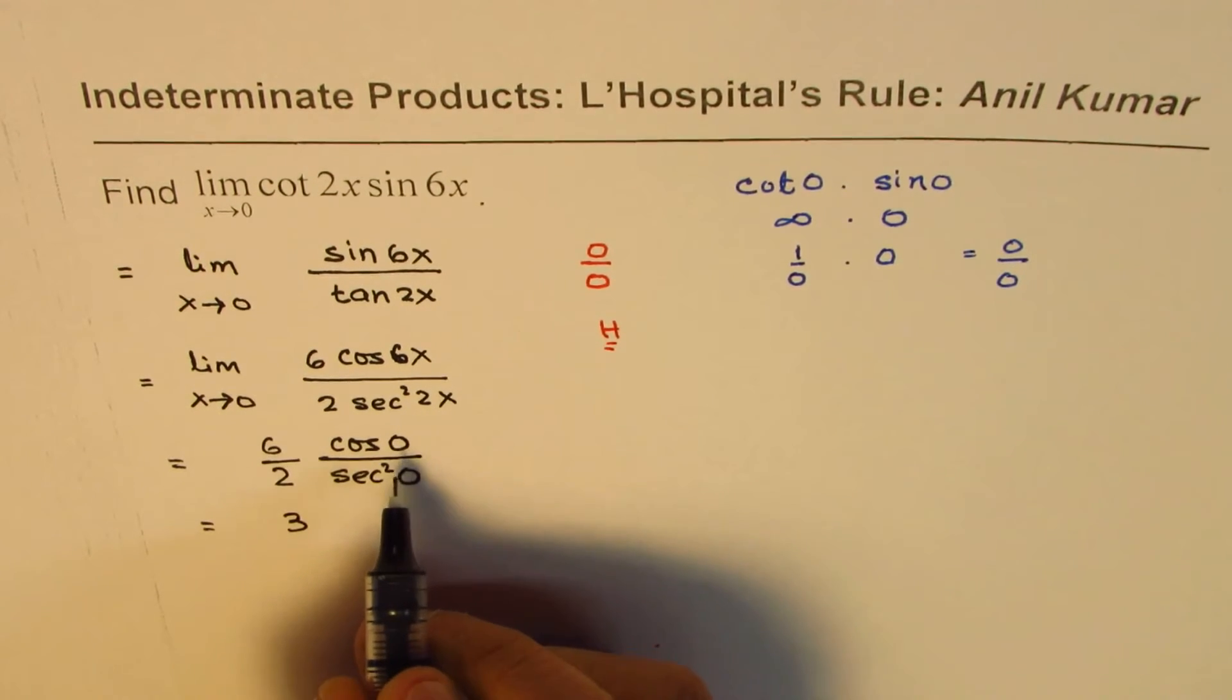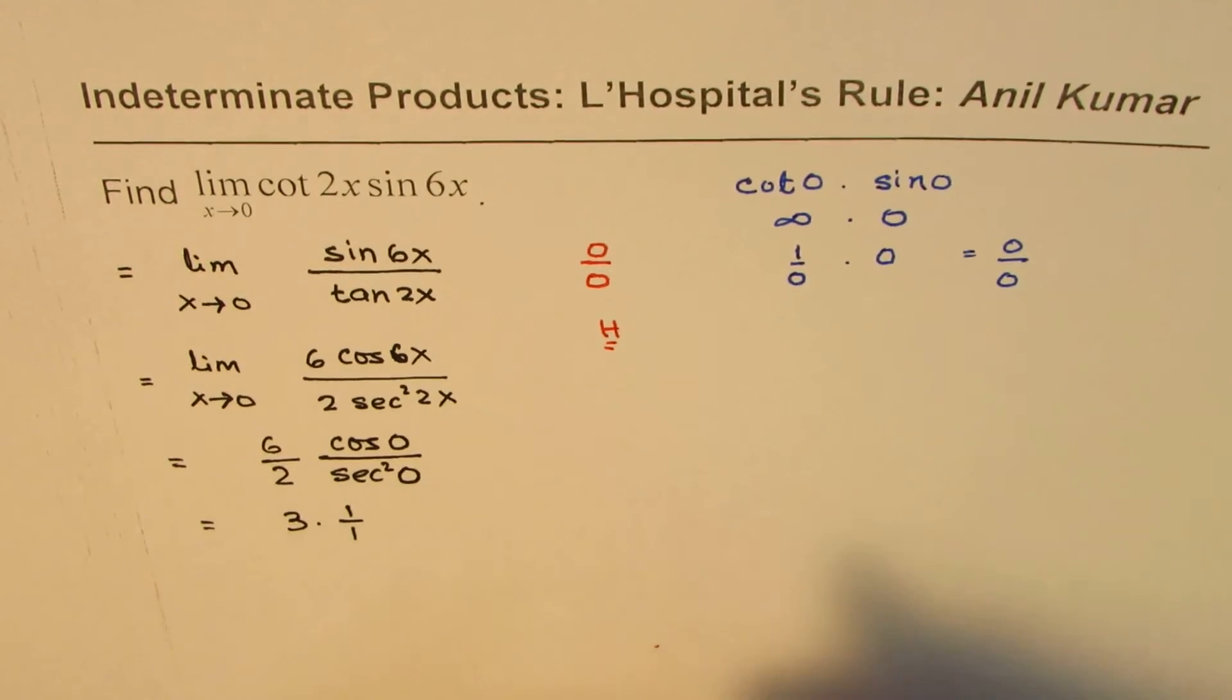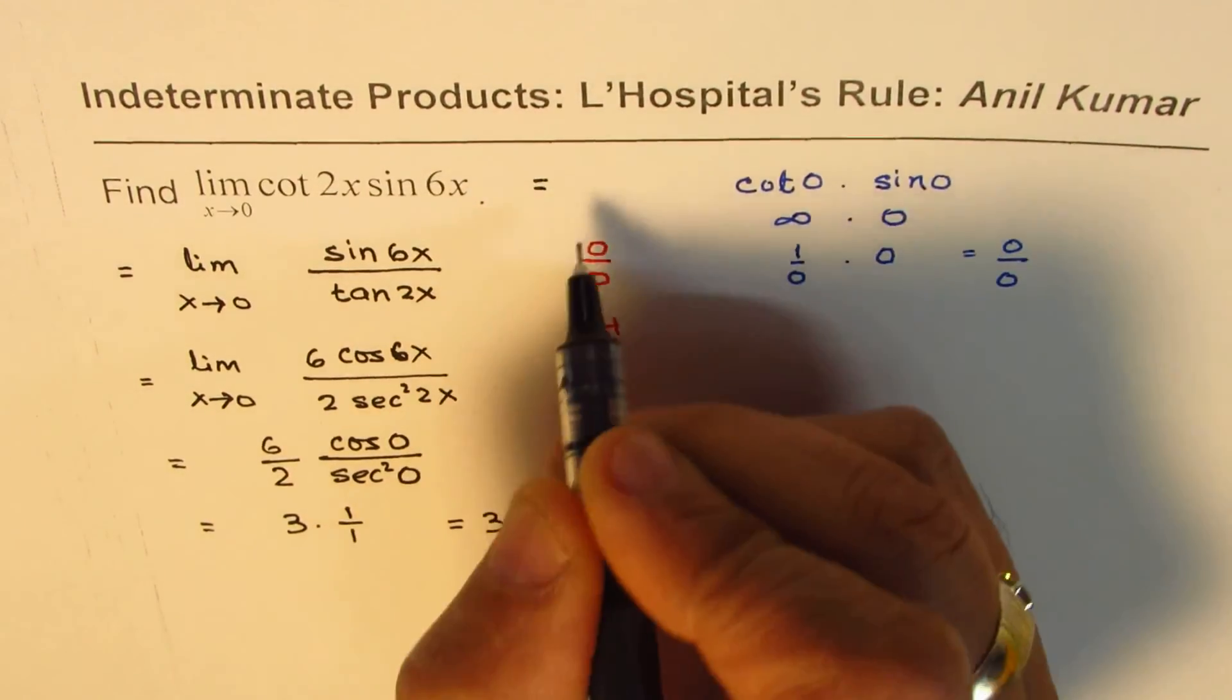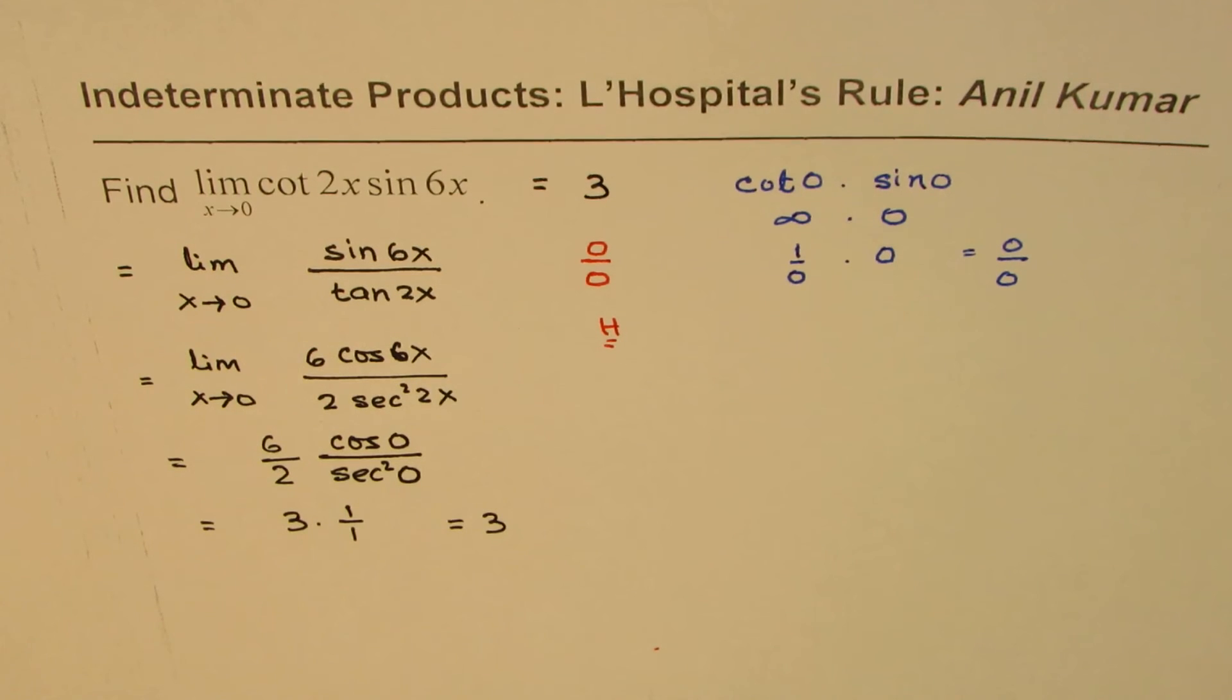Cos of 0 is 1, and secant square 0 is also 1. So we get 1 over 1, which is equal to 3. And therefore, the limit of this function is 3, and that is how we will solve it.